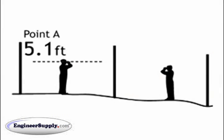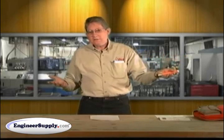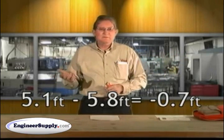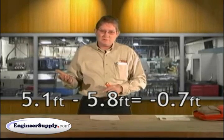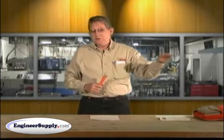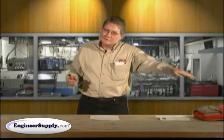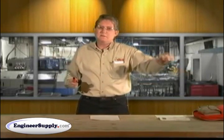Say if you've got 5.1 at A and 5.8 at B, subtract the two, you've got 7 tenths of a foot difference in elevation. If B is larger than A, that means you're going downhill, so it will be a negative 7 tenths of a foot.